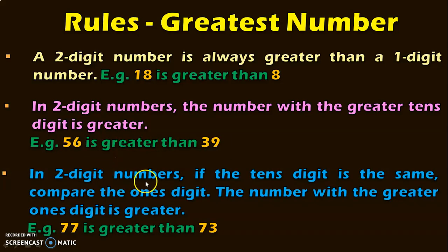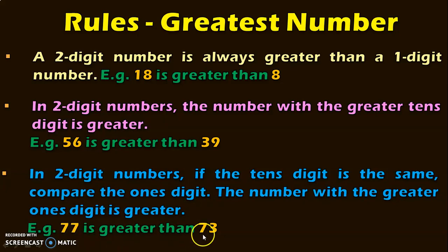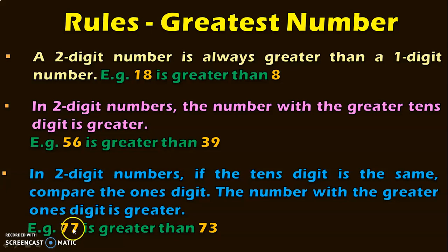The third rule is: in two-digit numbers, if the tens digit is the same, compare the ones digit — the number with the greater ones digit is greater. For example, consider 77 and 73, where both have 7 in the tens place. Move on to compare the ones place: we have 7 in 77 and 3 in 73. Since 7 is greater than 3, we conclude that 77 is greater than 73.